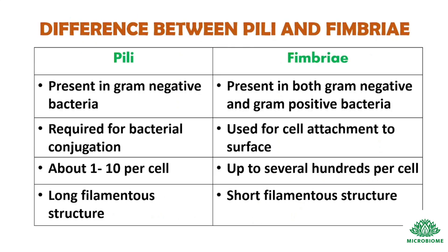Next, the difference between pili and fimbriae. Pili are present in gram-negative bacteria and are required for bacterial conjugation, with about 1 to 10 per cell. They are long filamentous structures. Fimbriae are present in both gram-negative and gram-positive bacteria, used for cell attachment to surfaces, with up to several hundreds per cell, and are short filamentous structures.